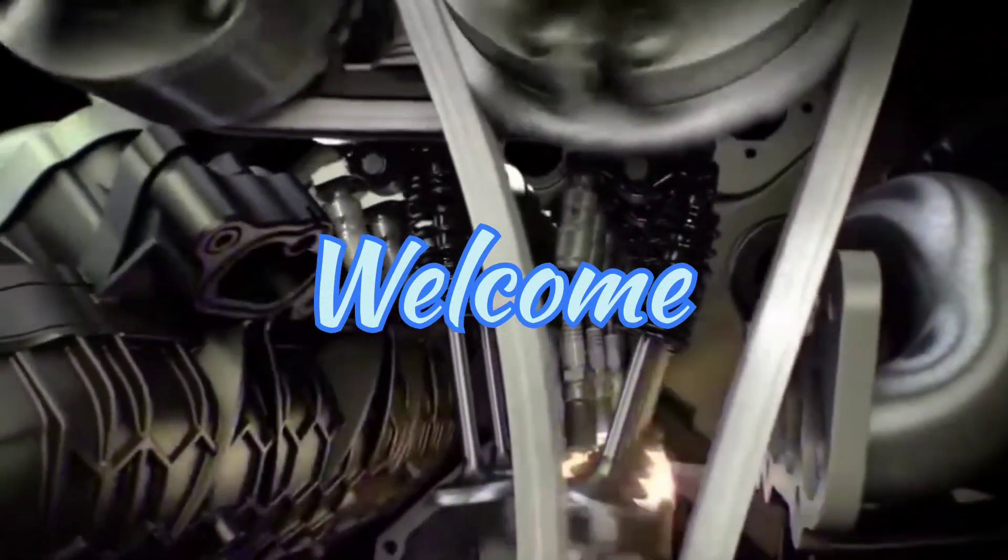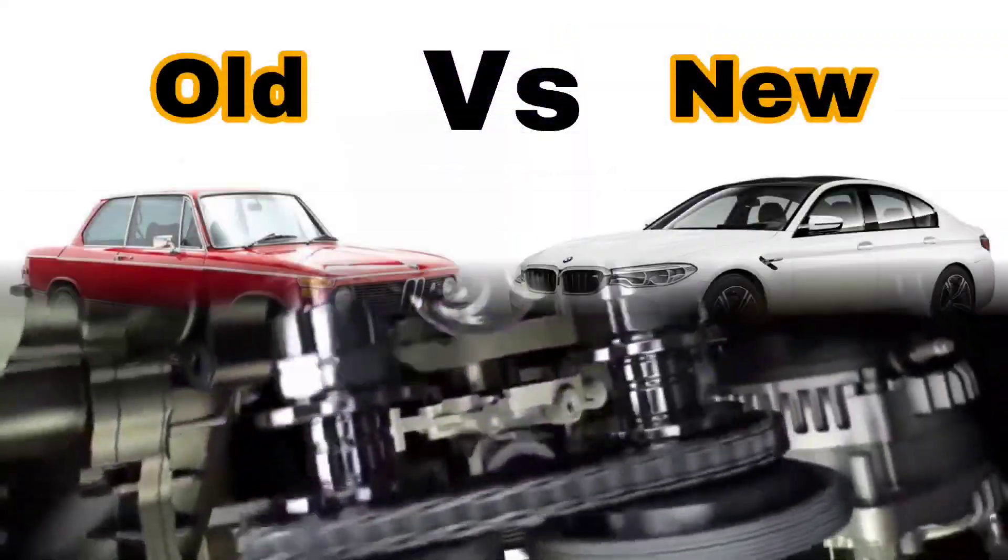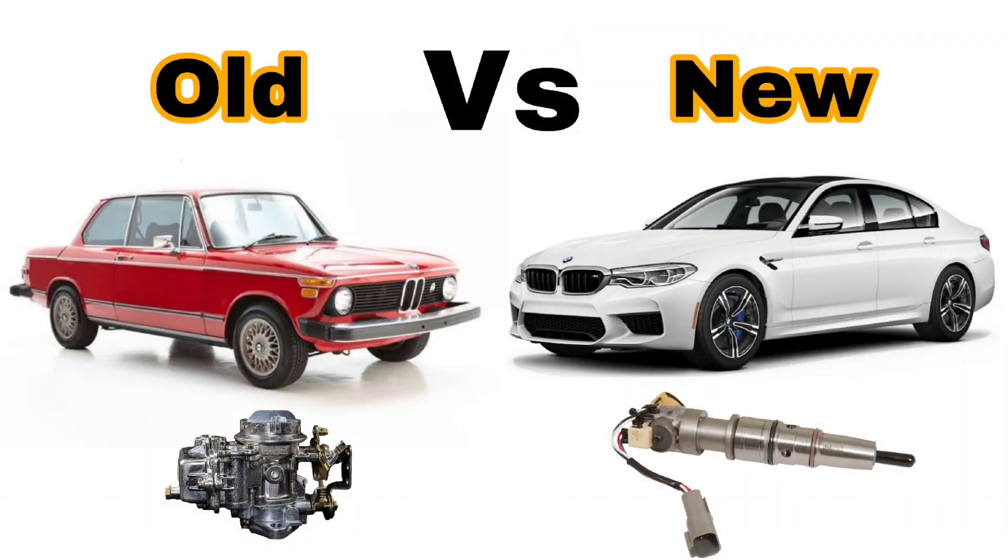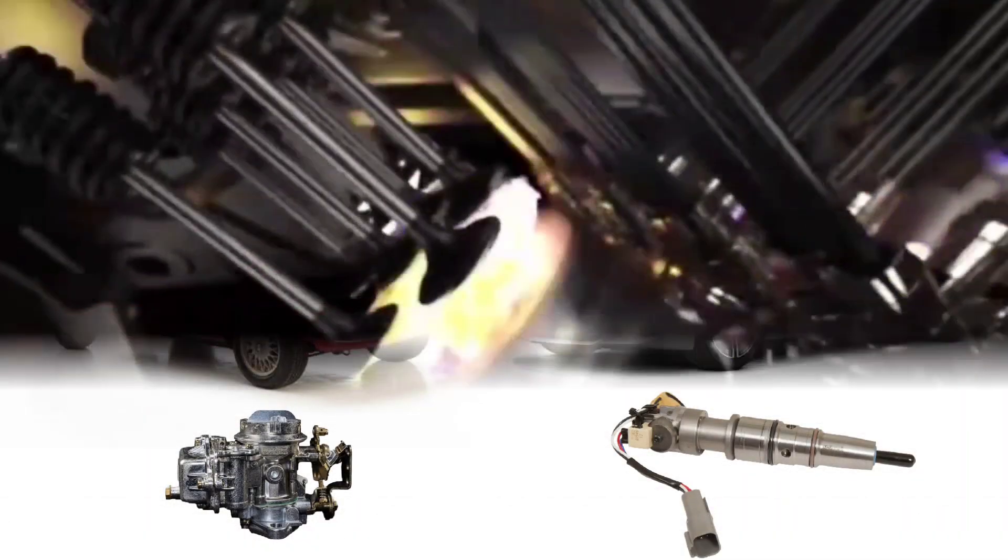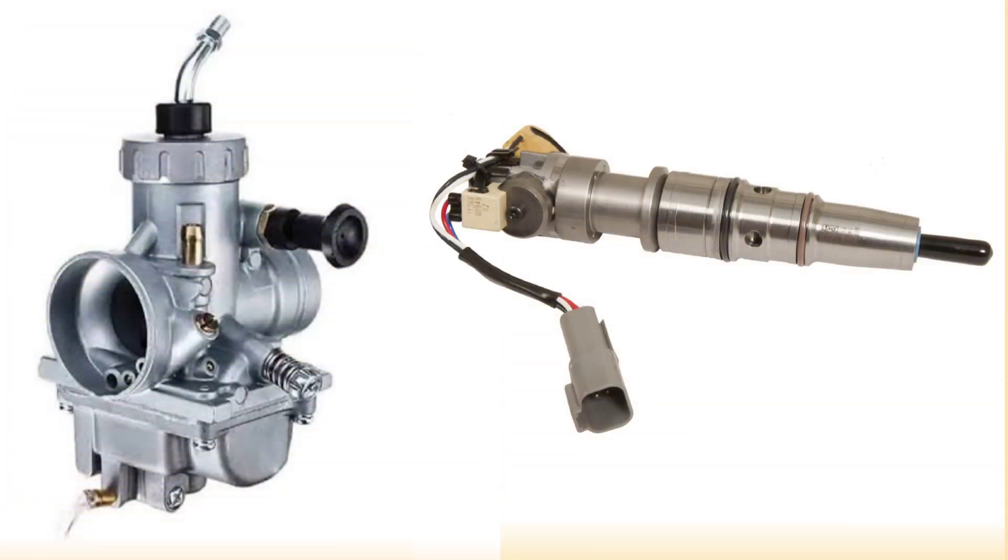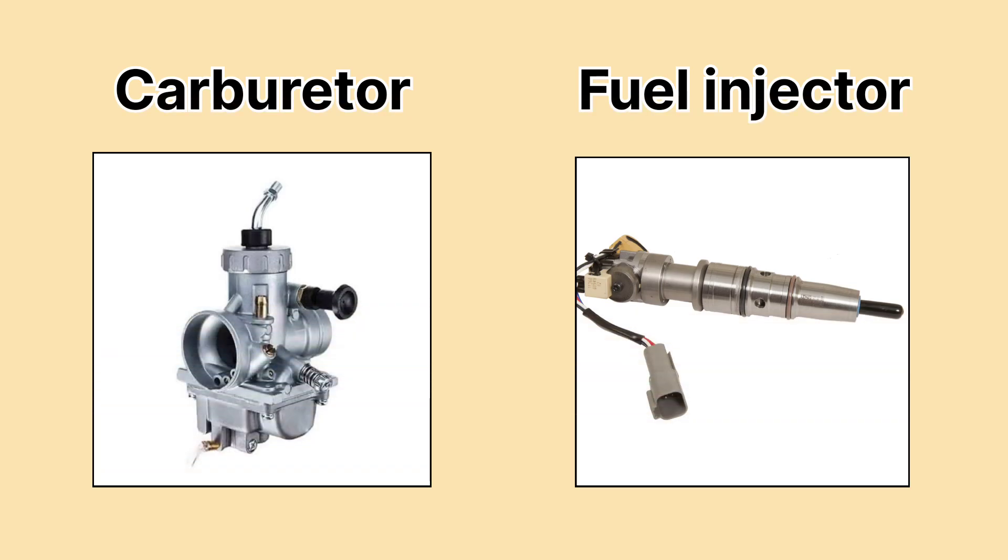Have you ever wondered how your car gets the right amount of fuel to run smoothly or what the real difference is between older vehicles and the ones on the road today? Well, a big part of that difference comes down to the way fuel is delivered to the engine. Today we're going to take a closer look at two main systems that do just that: the carburetor and fuel injection. So what's the difference between the two? Let's break it down.